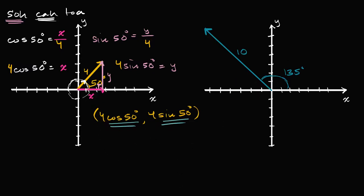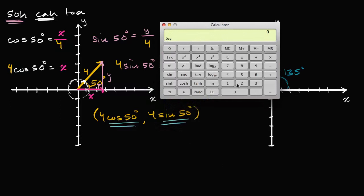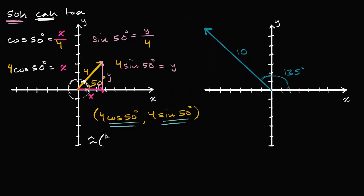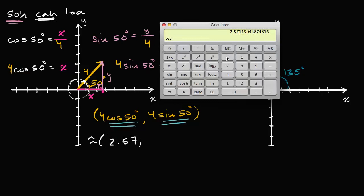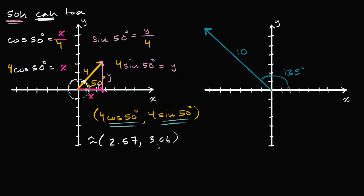We can get our calculator out and approximate these values. In degree mode: cosine of 50 degrees times four is approximately 2.57, so our x-component is approximately 2.57. And then for the y-component: sine of 50 degrees times four gives approximately 3.06. We can see this on the graph: the x-component looks a little more than 2.5, and the y-component looks slightly more than three. It all works out.